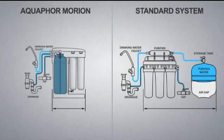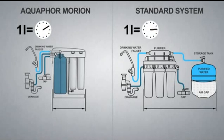Aquaphor Morion is faster. It takes only 10 minutes for you to get one liter of purified water with our system, compared to 20 minutes for conventional systems.